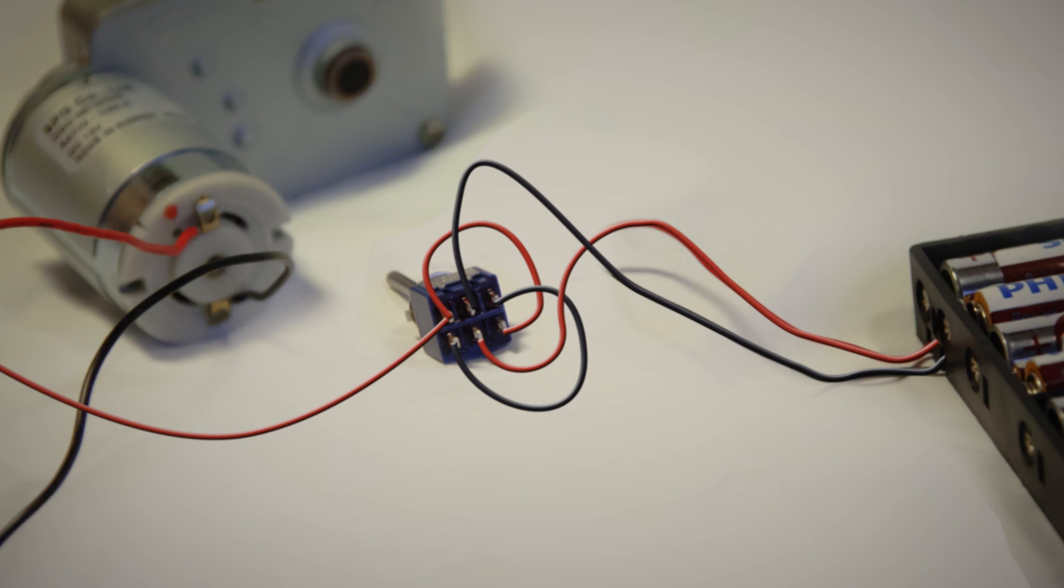Finally take the positive wire from the motor and connect it to a corner pin with a positive wire. Then take the negative wire from the motor and connect it to the corner pin with the negative wire.